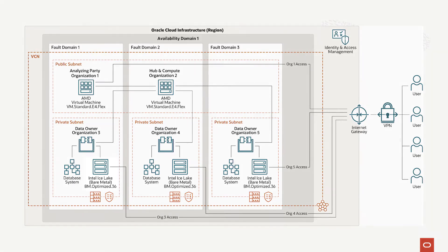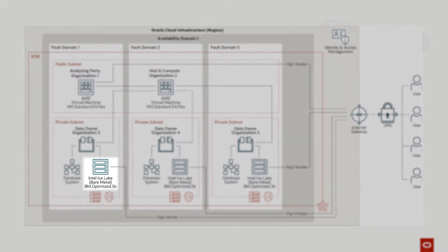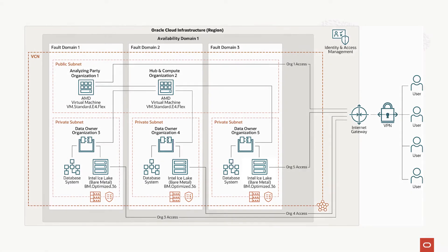The latest third-gen Xeon processors, codenamed Ice Lake, have advanced vectorized instruction sets, also called AVX, that support the kinds of computations that accelerate our core encryption products and privacy tools, otherwise known as Duality SecurePlus products.